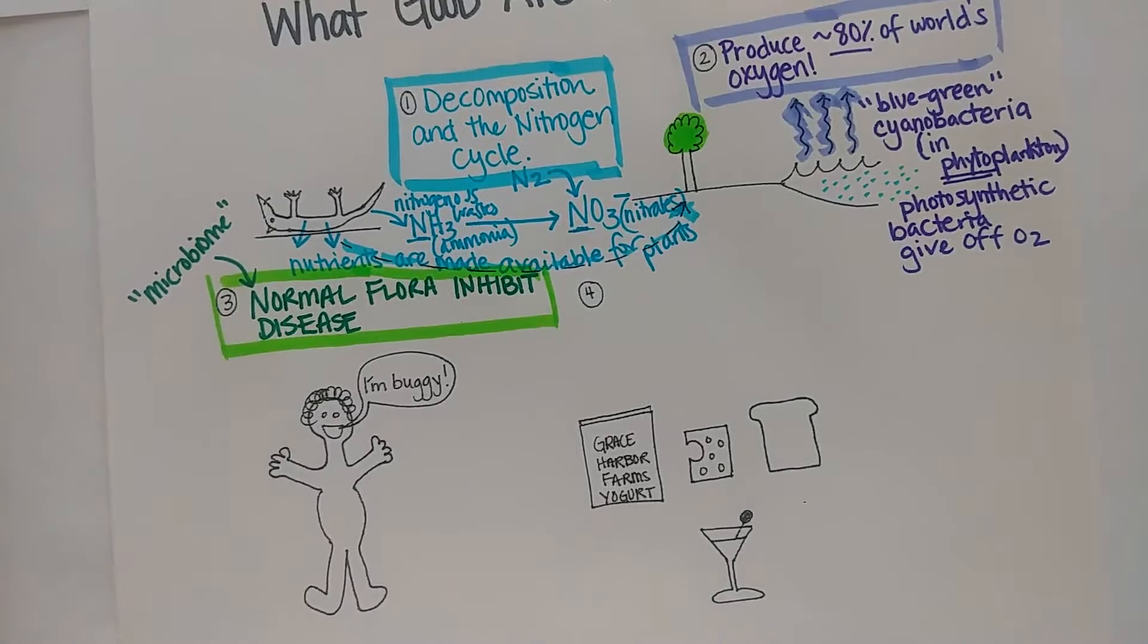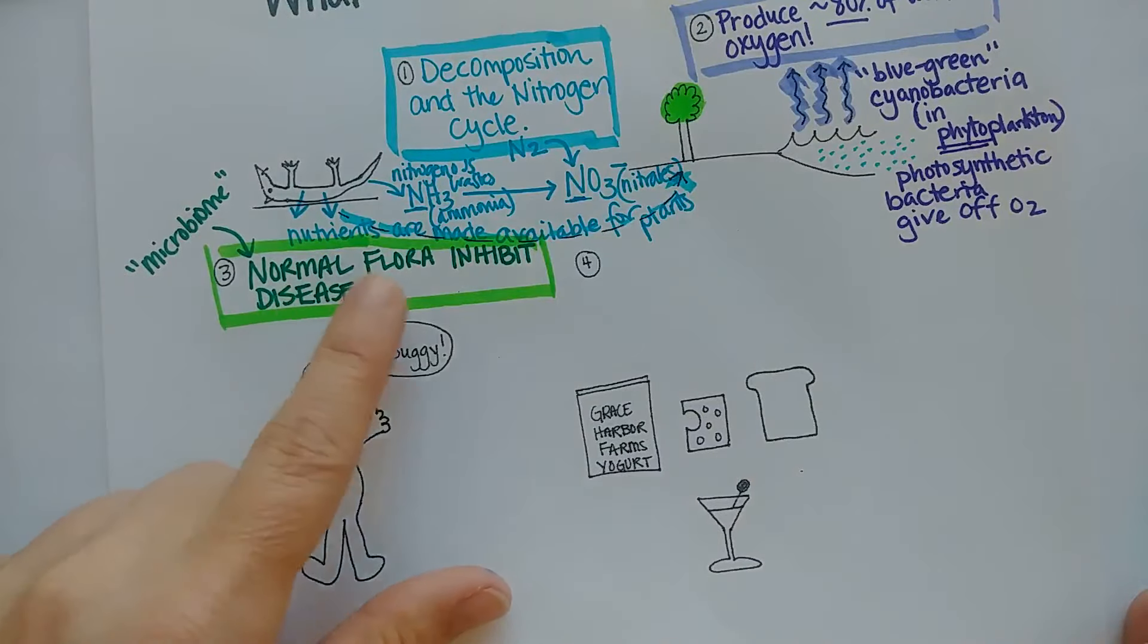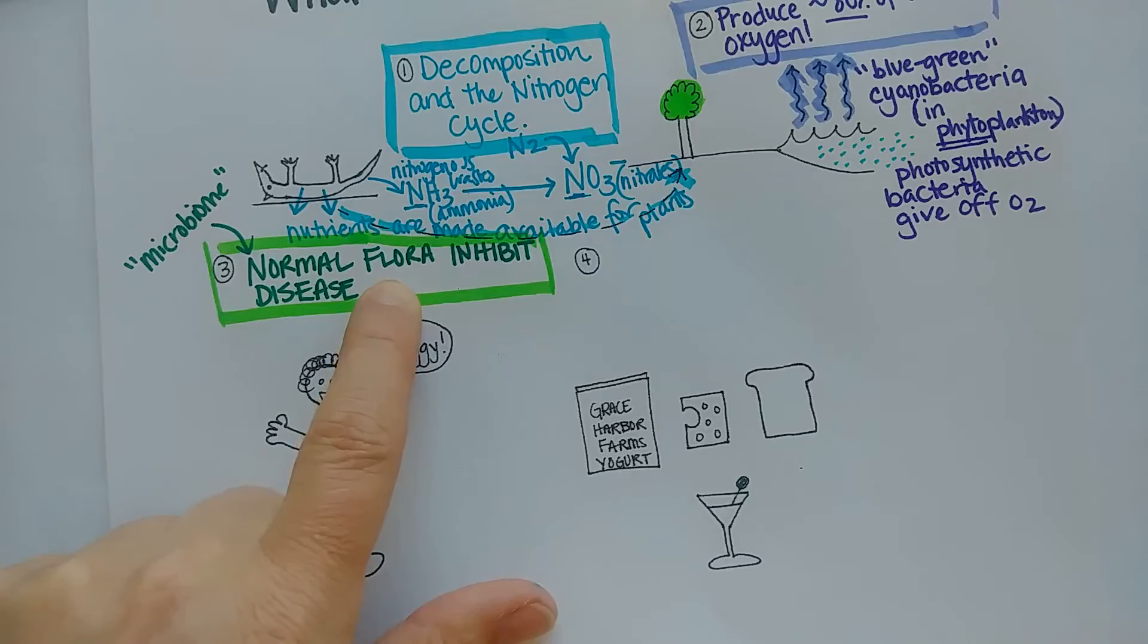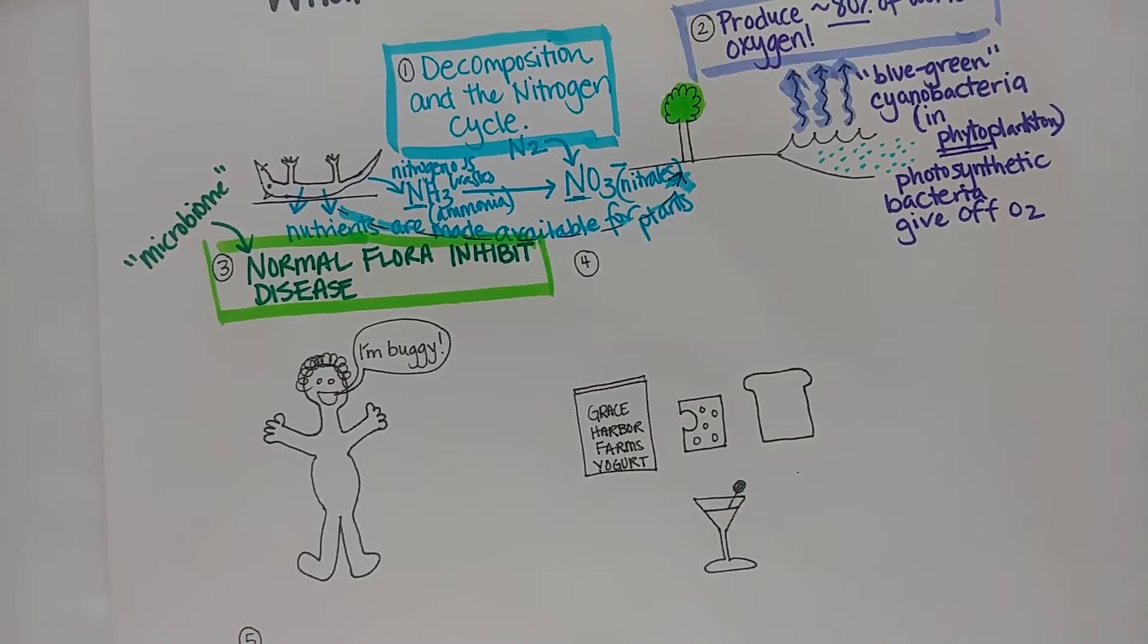We call that your microbiome, and we used to just call it normal flora. It's still a common term, but flora actually means like plants—I think it comes from an old-fashioned way of referring to bacteria as more plant-like. Flora means plant life and fauna means animal life, if you've ever heard of flora and fauna.